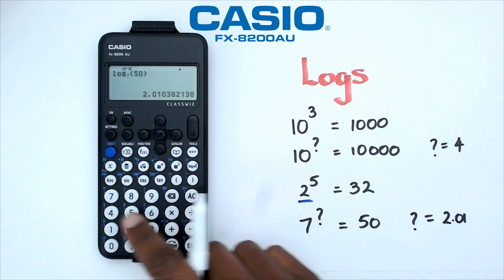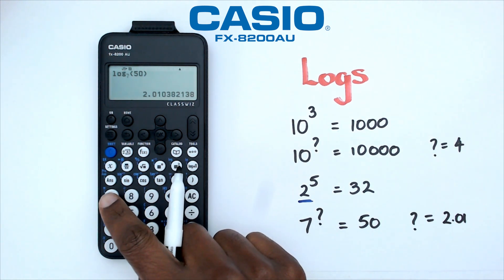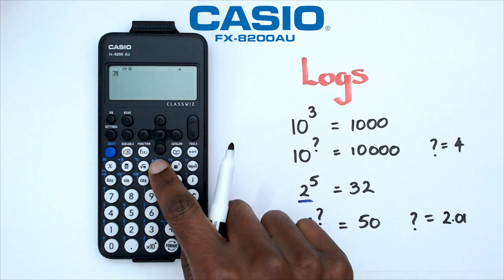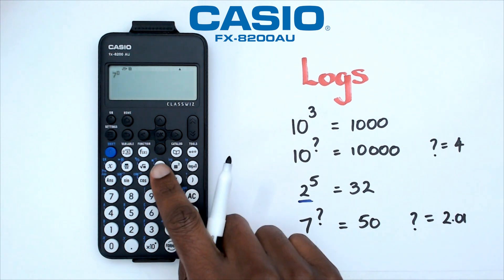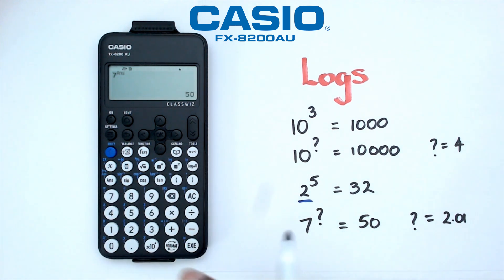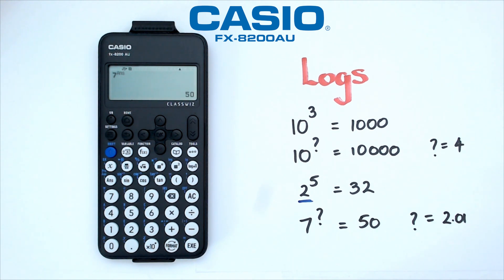If you want to check your answer, you can do 7 to the power of Ans, and that should give you exactly 50 because the number isn't rounded. That's a quick example to show you how to calculate logs with different bases on this particular calculator.